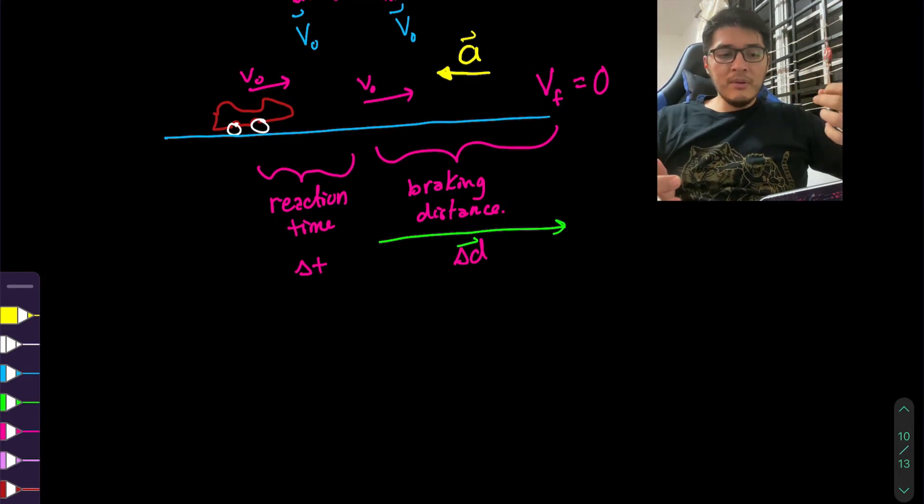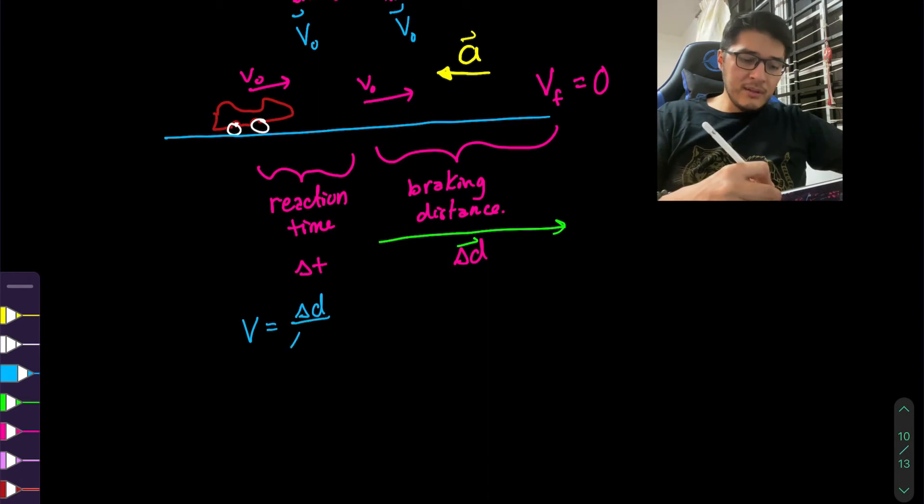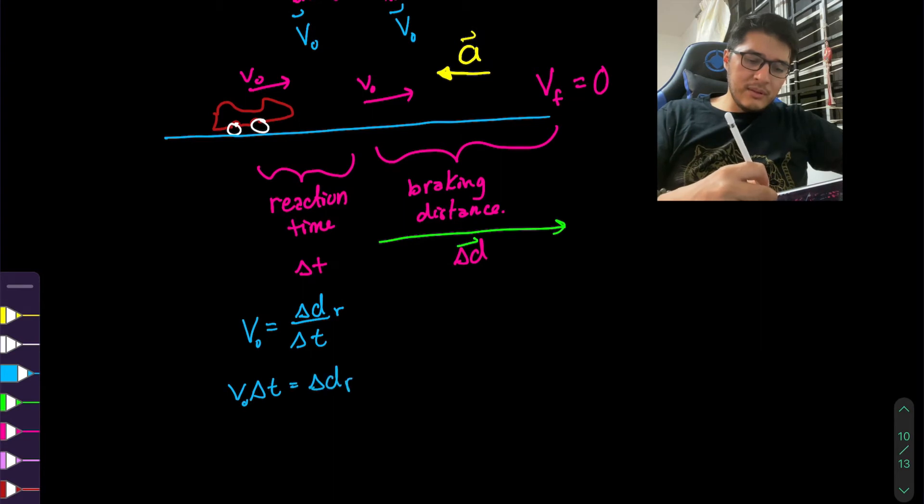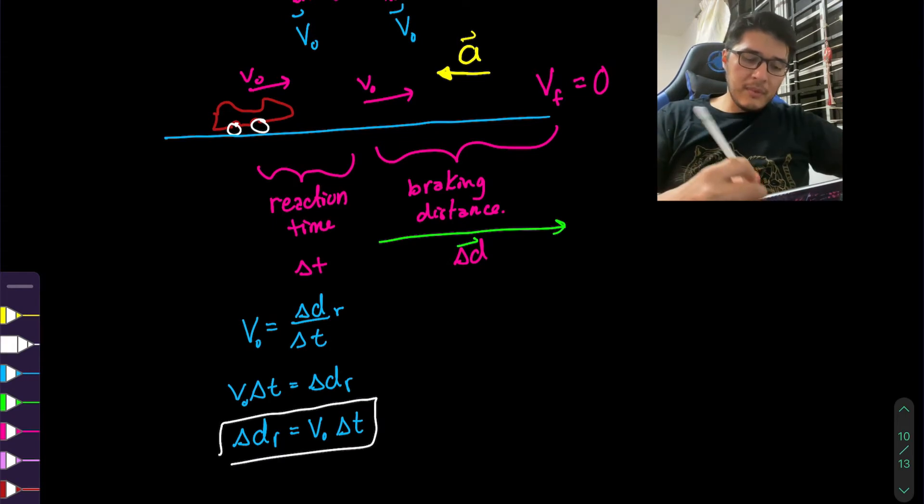So they gave us three different scenarios. But what I'm going to do, I'm going to set up the equations nicely for the first scenario. And then for scenario two and three, we just have to quickly sub in the numbers. So during the first section, because it's moving with constant velocity, we can use a very simple formula. Velocity is displacement over time. And this displacement, let's call it delta dR for reaction displacement. So Vi times delta t. So this is the equation to calculate the distance that the car was traveling during the reaction time. So this is the main first formula.